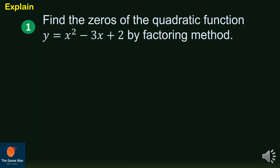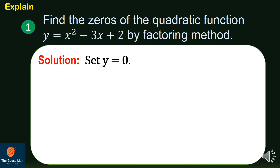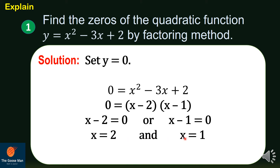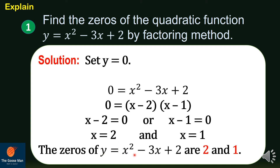Find the zeros of the quadratic function y equals x squared minus 3x plus 2 by the factoring method. We let y equal 0, so 0 equals x squared minus 3x plus 2. Factoring gives 0 equals (x minus 2)(x minus 1). Applying the zero property: x minus 2 equals 0 or x minus 1 equals 0, giving x equals 2 and x equals 1. The zeros of y equals x squared minus 3x plus 2 are 2 and 1.